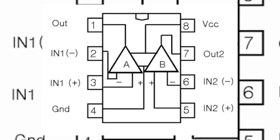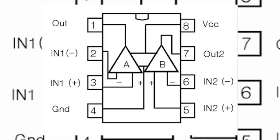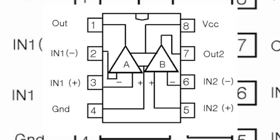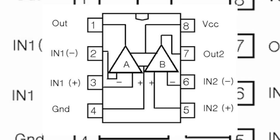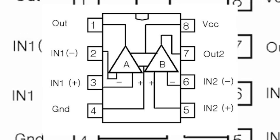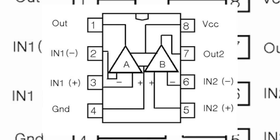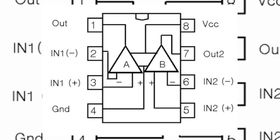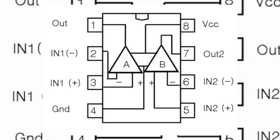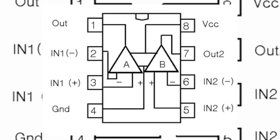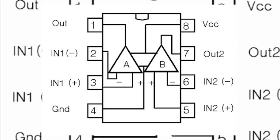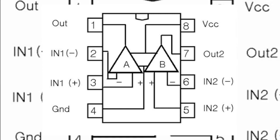You can use the same surround amplifier and the same gain. You can use the IC with single power and dual power. You can use the IC input and output.